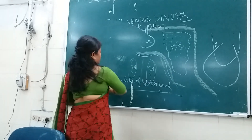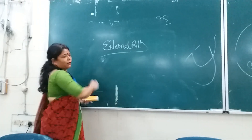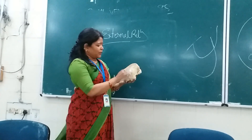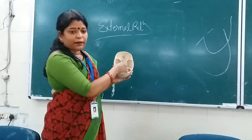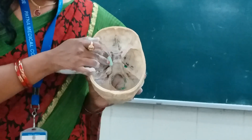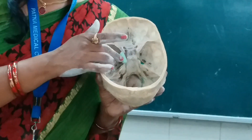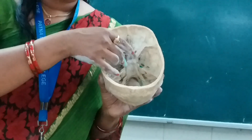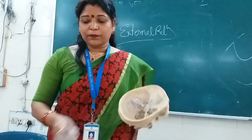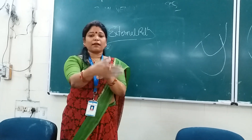Now the external relations of the cavernous sinus. There are six relations to consider: superior, inferior, medial, lateral, anterior, and posterior relations.